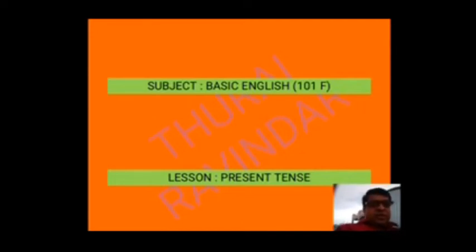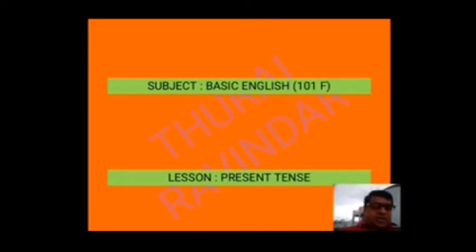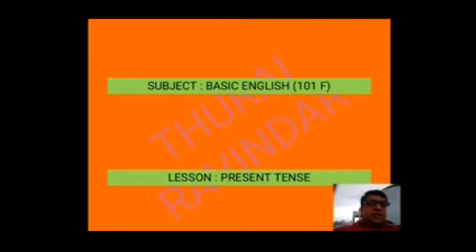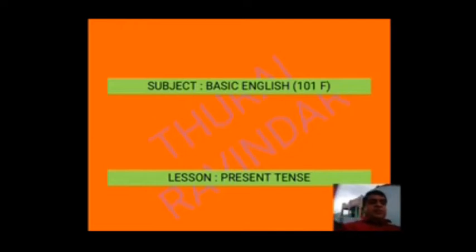Before we start, let us discuss something about tenses. Tense tells us about the time of the work, and works are expressed in verb form 1, verb form 2, and verb form 3. There are three types of tenses in English: present tense, past tense, and future tense. Present tense is also divided into four parts: simple present tense, present continuous tense, present perfect tense, and present perfect continuous tense.